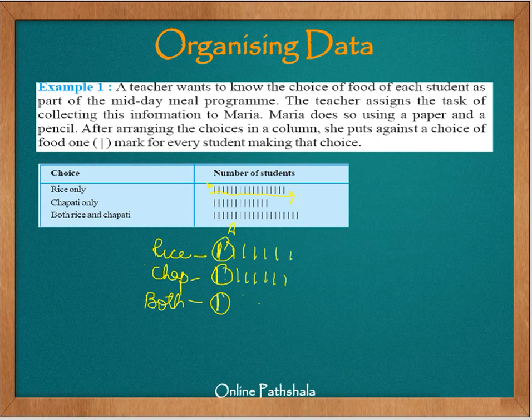To make counting easier, we can group the ticks. Instead of counting 13 individual marks, we can arrange them in groups of 5, then a space, then another group of 5, then the remainder. This way we can quickly see: 5 plus 5 is 10 plus 3 equals 13. It's much easier to count in groups than to count all marks individually.